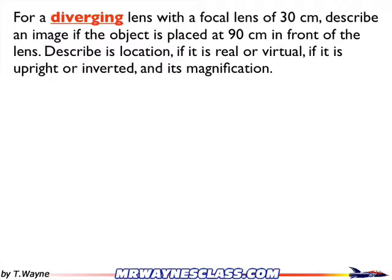This video is going to show you how to solve an example problem for a diverging lens using the lens equation. For a diverging lens with a focal length of 30 centimeters, describe the image if the object is placed 90 centimeters in front of the lens — its location, whether it's real or virtual, upright or inverted, and its magnification.